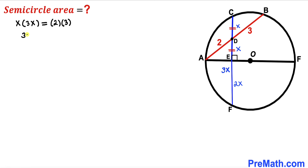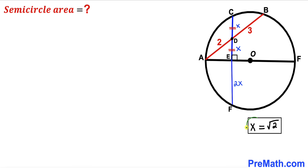Let's simplify: X times 3X gives us 3X squared equals 6. Dividing both sides by 3, we get X squared equals 2. Taking the square root of both sides, X equals the square root of 2. So CD is square root of 2, DE is square root of 2, and EF is 2X, which equals 2 times the square root of 2.